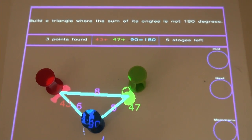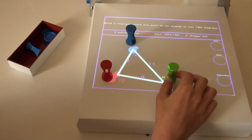First challenge. Is it possible to create a triangle that the sum of its angles is not 180 degrees?